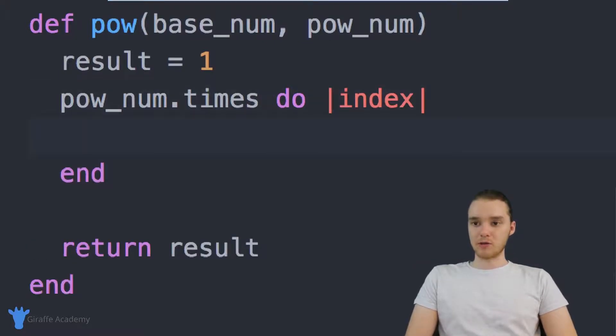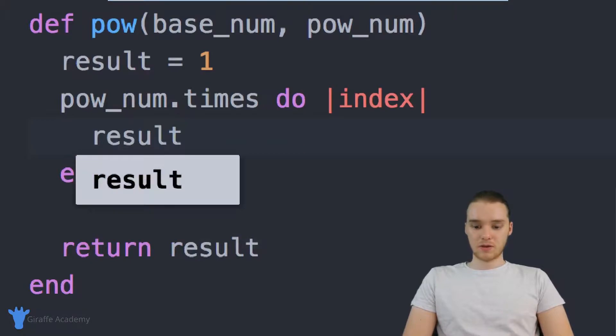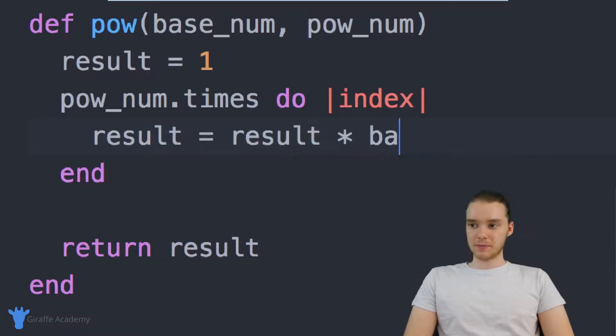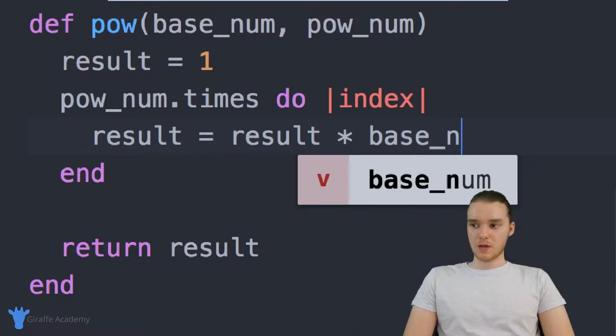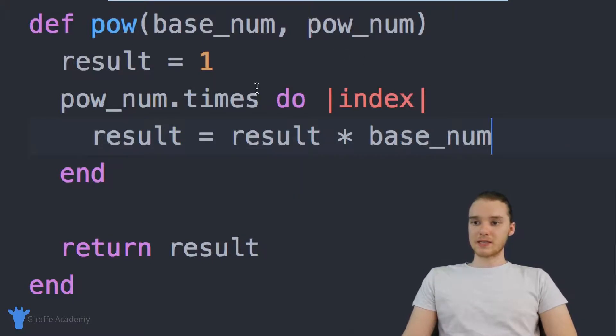Inside of this little loop here, we're basically just going to multiply result times the base number. So I'm just going to say result is equal to result times base_num. So essentially, what's happening is pow_num dot times do index, this is essentially just going to loop through the code inside of here, pow_num times.